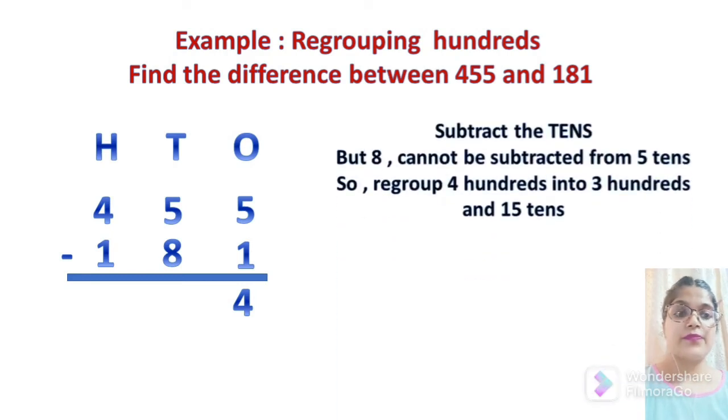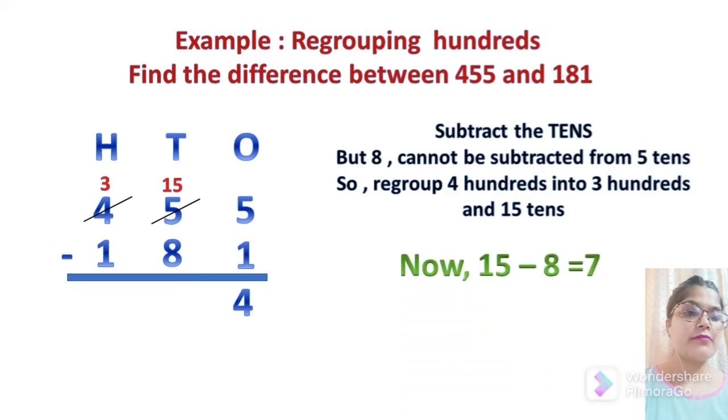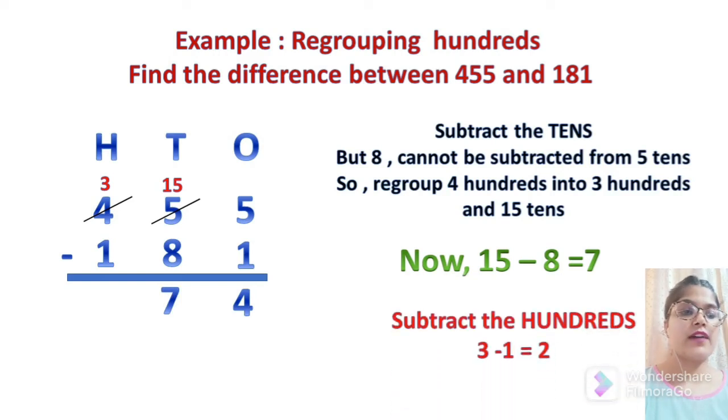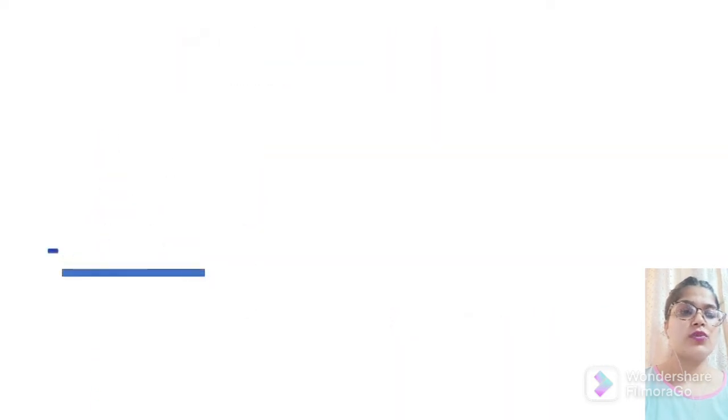And then at tens, you can see 5 is smaller than 8. That means 8 cannot be subtracted from 5 tens. So we will regroup 4 hundreds into 3 hundreds and 15 tens. For that, we will put cross on 5 and write 15 above that as we have taken borrow and we will put cross on 4 and write 3 above that as it is left with 3 only now. 15 minus 8 equals 7. So we will write 7 and let's subtract the hundreds and that we have 3 minus 1 equals 2.